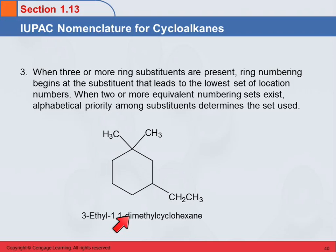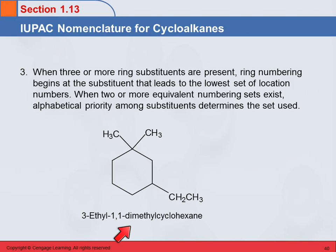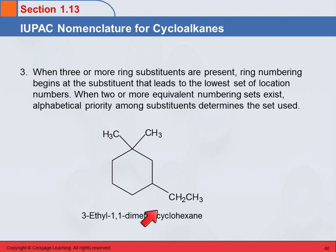So we have ethyl and two methyl groups, making it dimethyl. The numerical prefix 'di' doesn't count for alphabetizing — it just tells us how many. So E comes before M: ethyl is listed first, then dimethyl, giving us ethyl-dimethyl-cyclohexane.